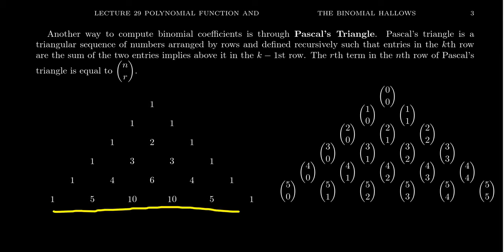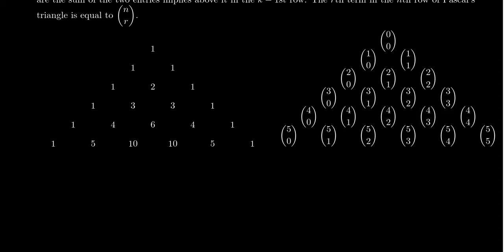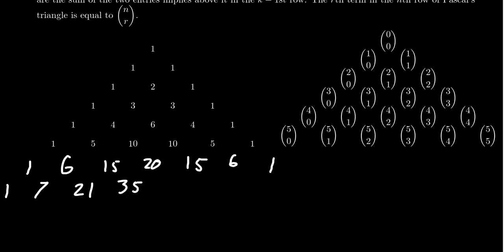We can construct additional rows recursively. The next row: start with 1; 1 plus 5 is 6; 5 plus 10 is 15; 10 plus 10 is 20; 10 plus 5 is 15; 5 plus 1 is 6; end with 1. The following row: 1; 1 plus 6 is 7; 6 plus 15 is 21; 15 plus 20 is 35; 20 plus 15 is 35; 15 plus 6 is 21; 6 plus 1 is 7; and then 1. We can keep going and going.